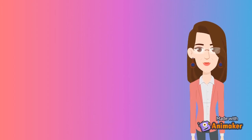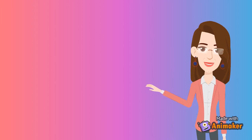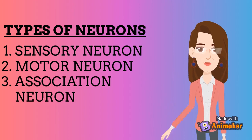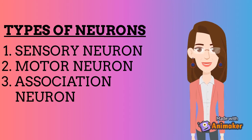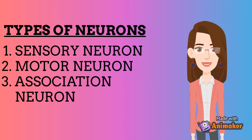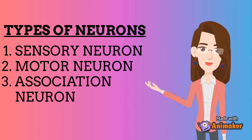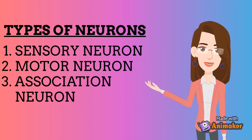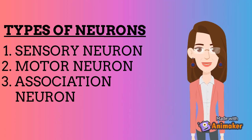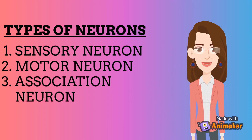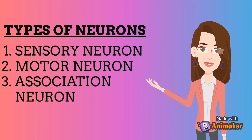Neurons are basically of three types: sensory neurons, motor neurons, and association or connecting neurons. Sensory neurons convey impulses from receptors to the main nervous system. Motor neurons carry impulses from the main nervous system to the effector, that is the muscle or gland. Association or connecting neurons are located in the brain and spinal cord and interconnect the sensory and motor neurons.